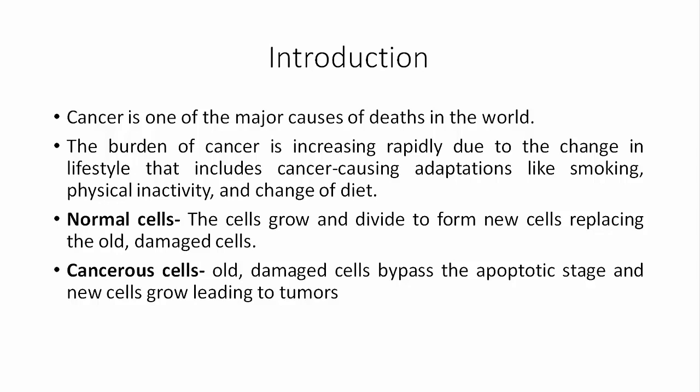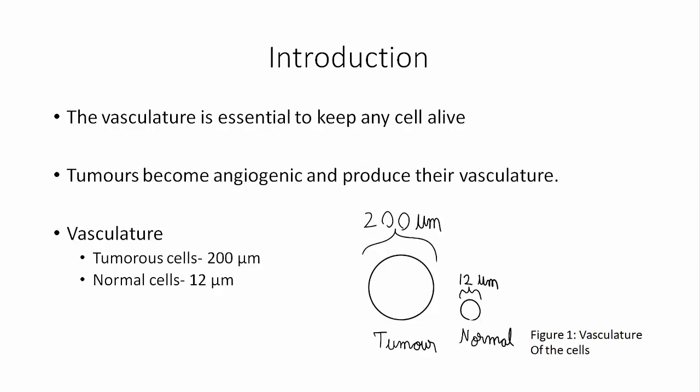What is the difference between a normal cell and a cancerous cell? A normal cell divides and dies after its life cycle. But a cancerous cell bypasses this apoptotic stage and keeps on reproducing, which leads to tumors.